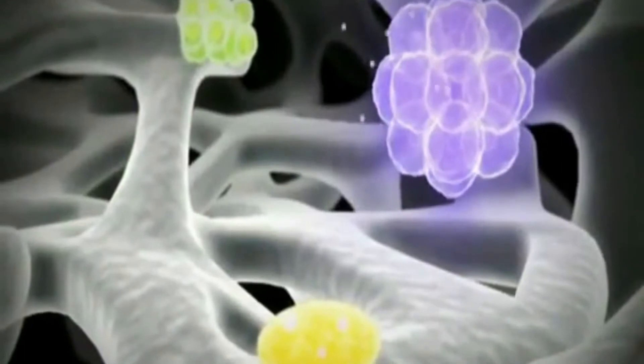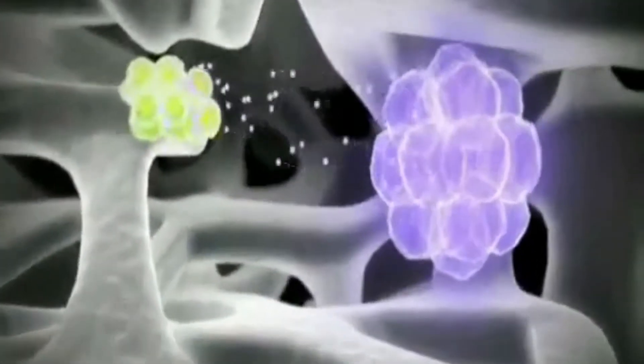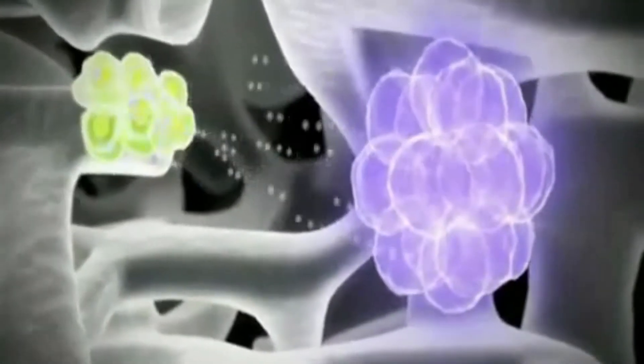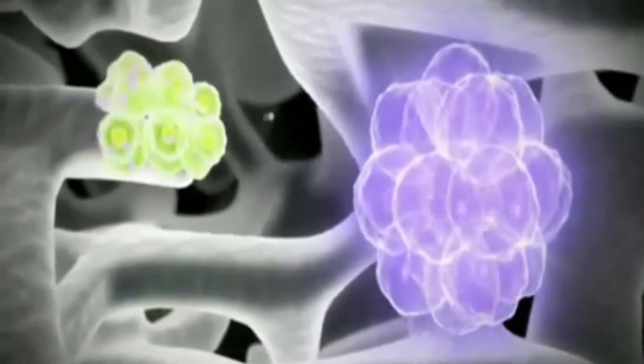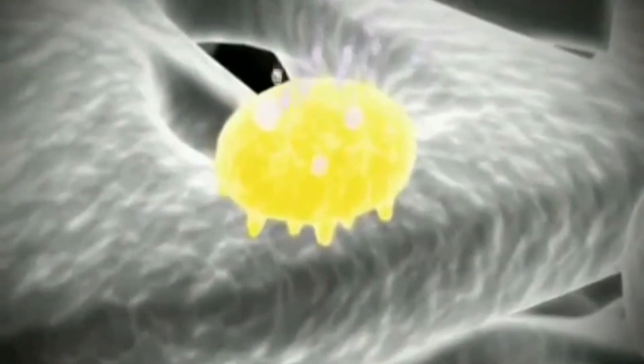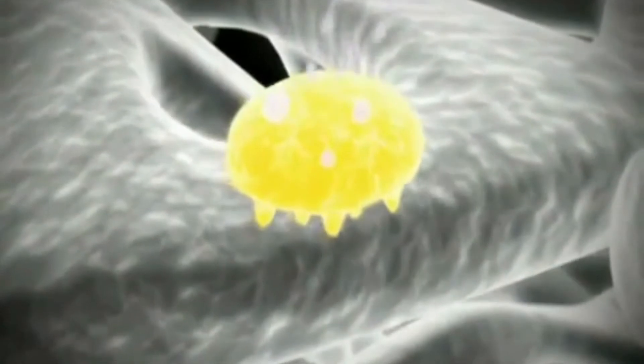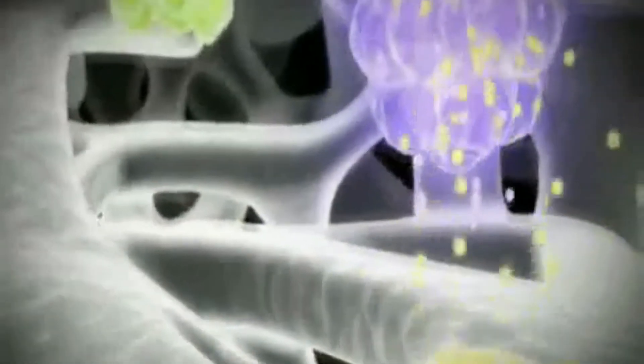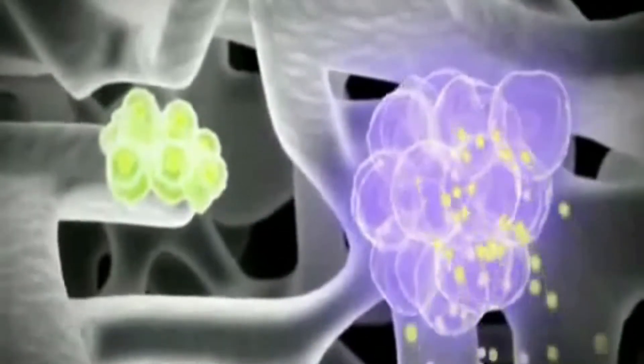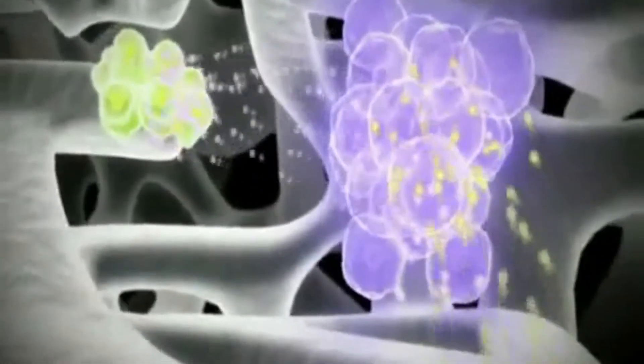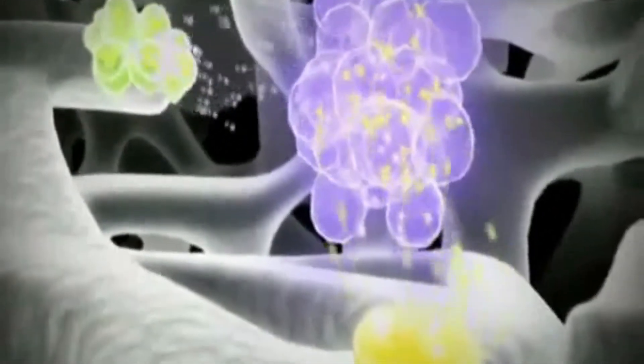the tumor cells release various growth factors, including endothelin-1, that stimulate the deposition of new bone by osteoblasts. However, at the same time, the tumor cells also release osteolytic factors that result in bone resorption by the osteoclasts, which try to compensate by secreting growth factors that stimulate the metastatic tumor cells to proliferate and survive, leading to release of more growth factors and creating a vicious cycle of stimulation.